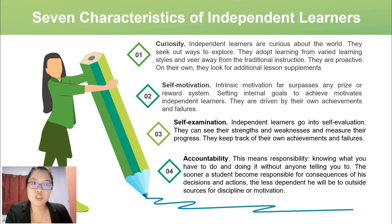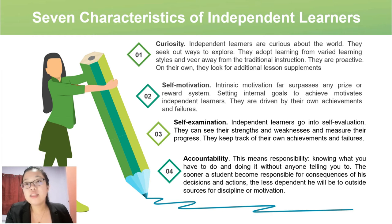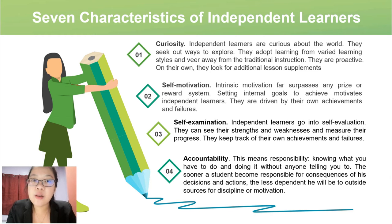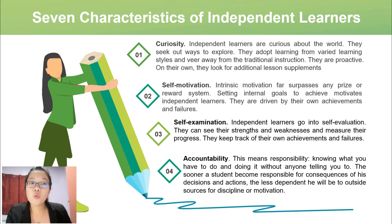The second characteristic is self-motivation: intrinsic motivation far surpasses any prize or reward system; setting internal goals motivates independent learners who are driven by their own achievements and failures. The third is self-examination: independent learners go into self-evaluation, can see their strengths and weaknesses, measure their progress, and keep track of their own achievements and failures. The fourth is accountability — knowing what you have to do and doing it without anyone telling you to.